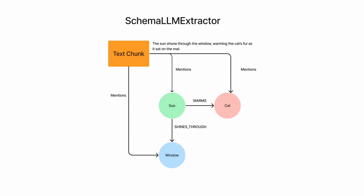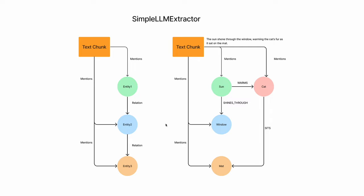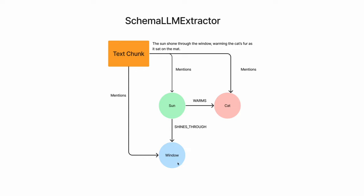Now let's look at the schema LLM extractor. It is similar to the simple LLM extractor, but it uses a predefined schema. It restricts what kinds of entities are available and what kinds of relationships are available between entities. This predefined schema is provided, and the LLM is restricted to use these predefined labels and relationships to create the property graph. Since we have restricted the 'mat' entity and its relationship, it is excluded from this property graph. If you examine the simple LLM extractor result, it has 'mat' and its relationships, but in the schema LLM extractor that entity and relationship is gone. This is how you can create a schema property graph using the schema LLM extractor.